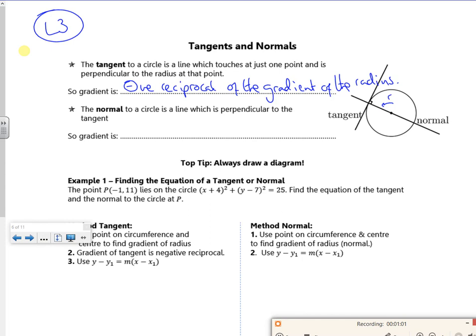The normal to the circle is a line which is perpendicular to the tangent, but it's also the gradient of your radius as well. So it's the same.